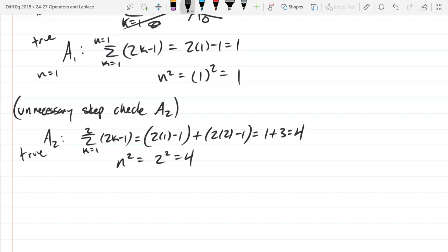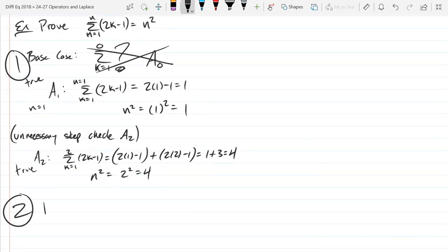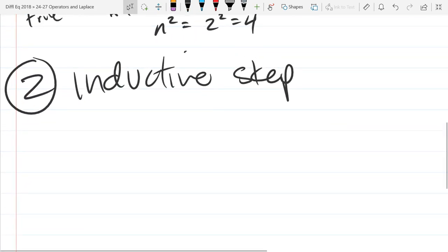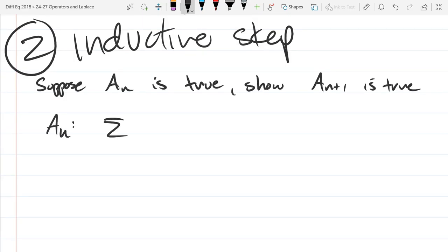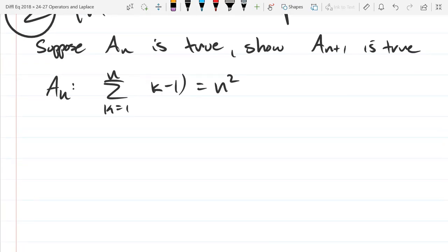We're going to do our inductive step now. This is all just base case. Now the inductive step. If you read back, it says you assume a_n is true and show a_n plus 1 is true. We'll write down a_n, it's a sum k equals 1 to n, 2k minus 1 equals n squared. This is true.